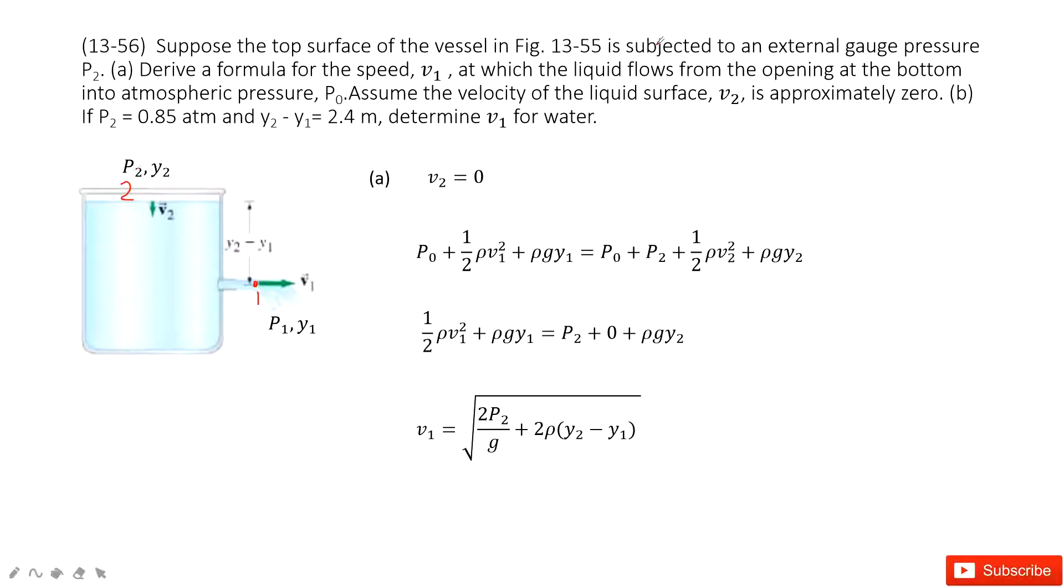This p2 is subjected to external gauge pressure, so this p2 is added inside. Then it has y2, and v2 is almost equal to 0, so v2 equals 0. Now we need to find v1. How can we do that?